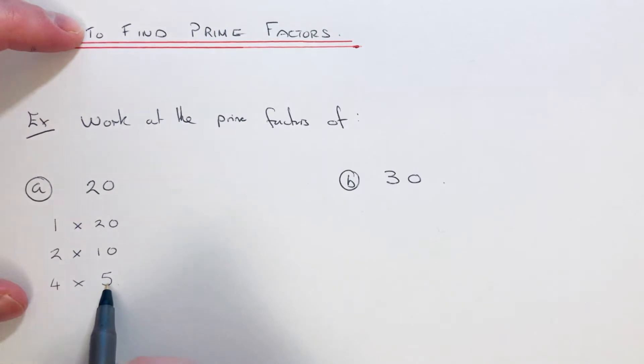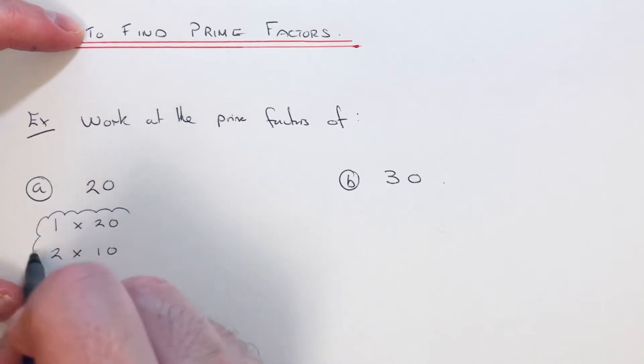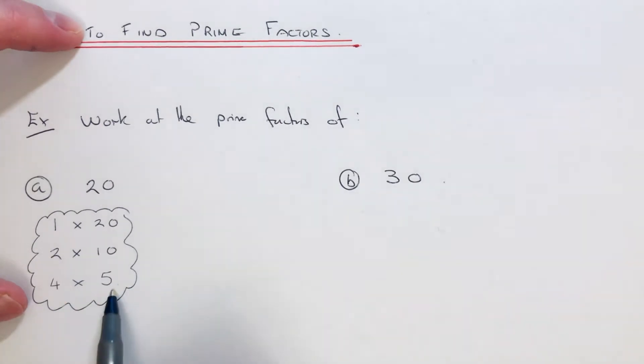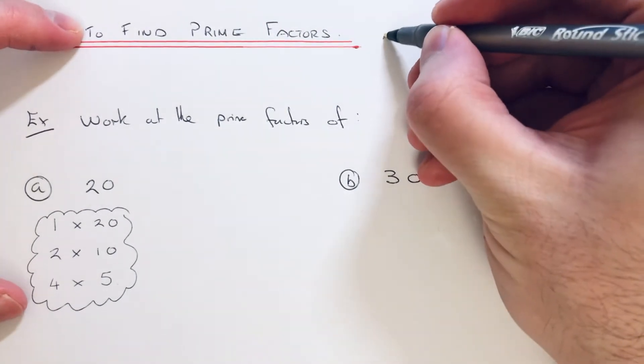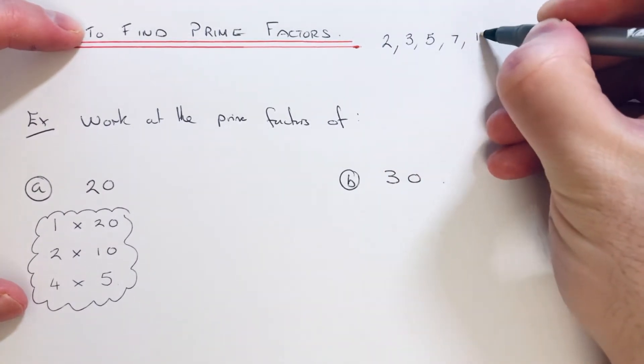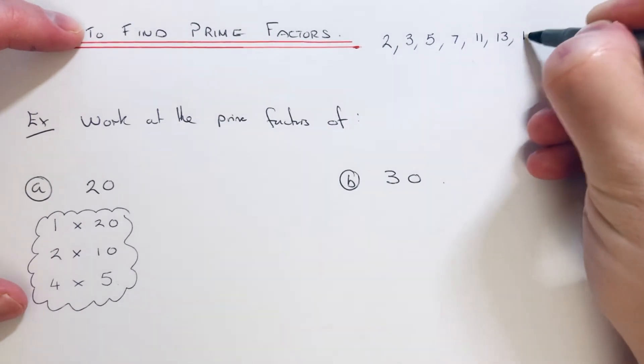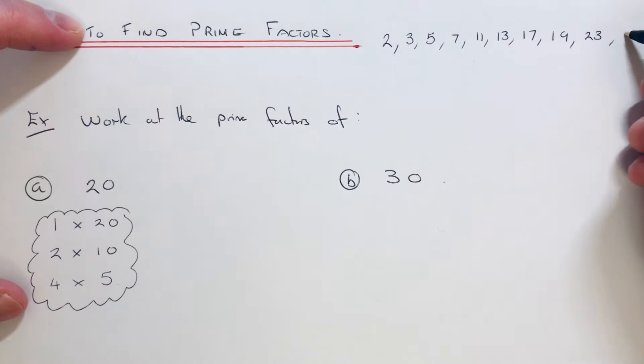We now need to decide which ones of these factors are prime. A prime number can only be divided by 1 and itself, so it's a good idea to know your first 10 prime numbers: 2, 3, 5, 7, 11, 13, 17, 19, 23, and 29.